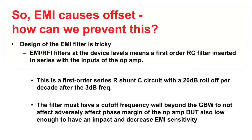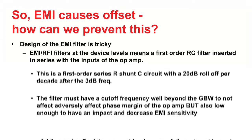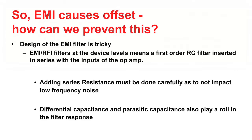Though the concept is basic, choosing the R and C values of the low-pass filter is tricky. The filter must have a high cutoff frequency beyond the gain bandwidth of the device so as to not adversely affect phase margin. The filter bandwidth also must be low enough to have an impact on decreasing EMI sensitivity. Adding series resistance must be done carefully as to not impact low frequency noise. Differential capacitance and parasitic capacitance also play a role in the filter response and vary with input device size.